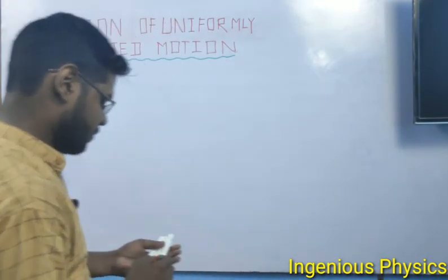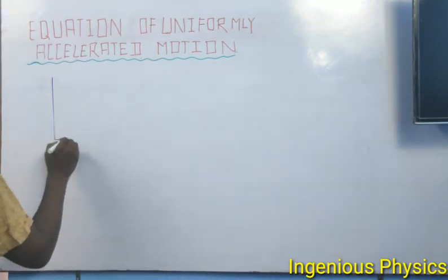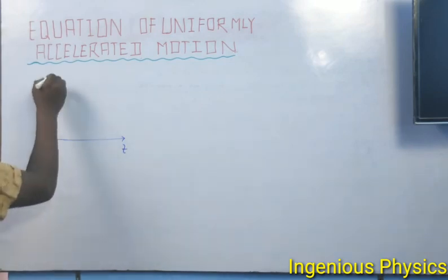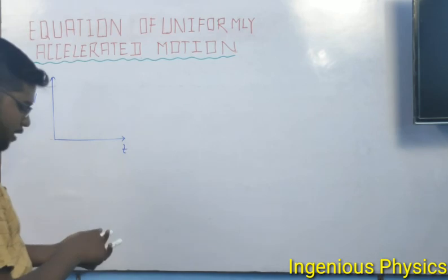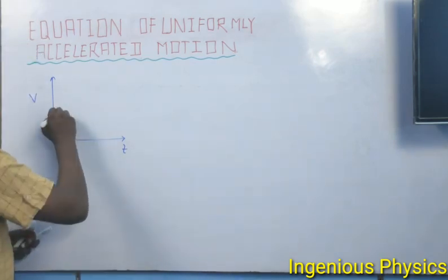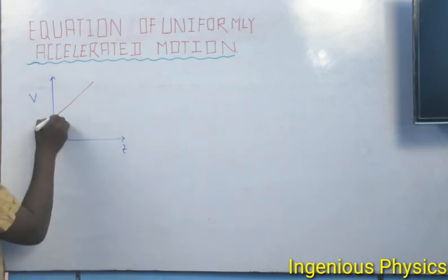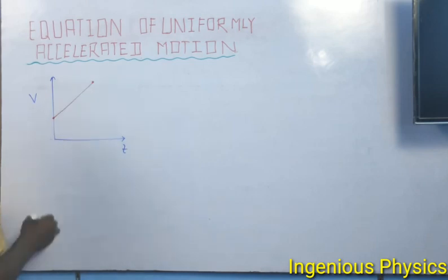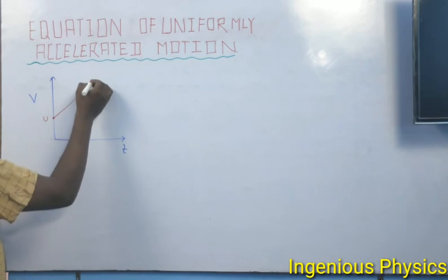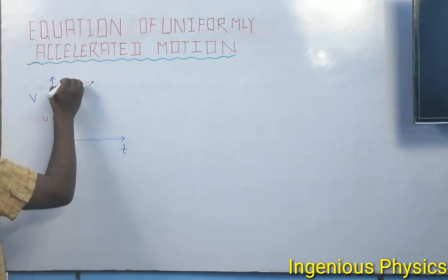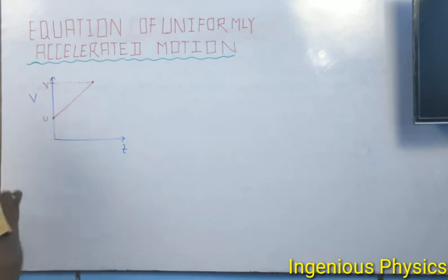First of all, we will draw a velocity-time graph. The velocity-time graph has a time axis and a velocity axis. When we draw the graph, the first point represents the initial velocity and the last point represents the final velocity.